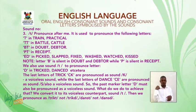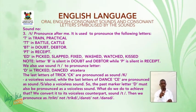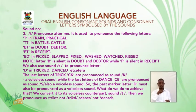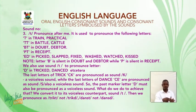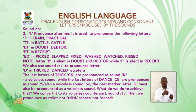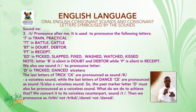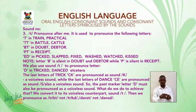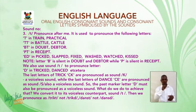We also use sound /t/ to pronounce letter D in words like tricked and danced. The last letters of trick — CK — are pronounced as sound /k/, a voiceless sound, while the last letters of dance — CE — are pronounced as sound /s/, also a voiceless sound. So the preceding letter D must also be pronounced as a voiceless sound. We convert it to its voiceless counterpart, sound /t/. So we pronounce it as tricked, not tricked with /d/; danced, not danced with /d/.